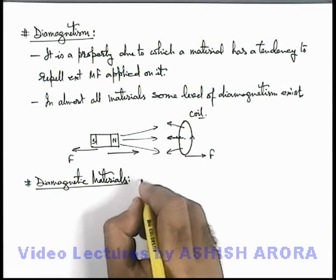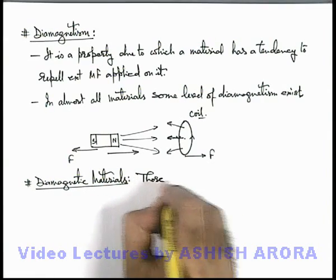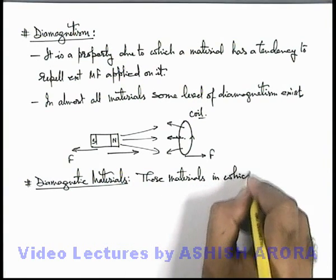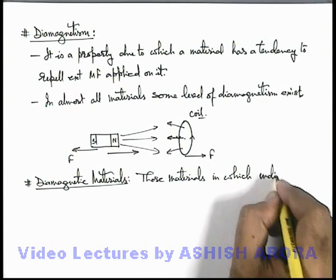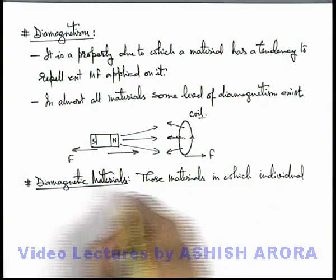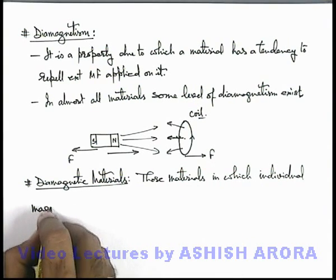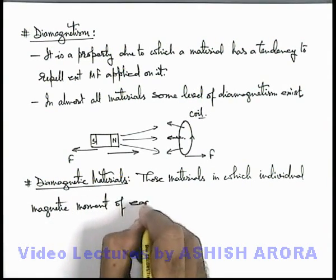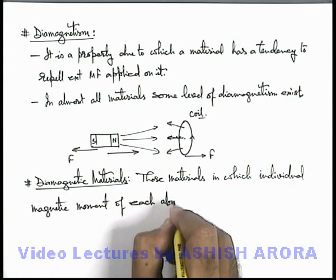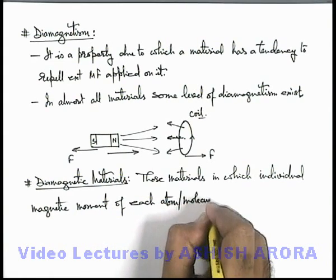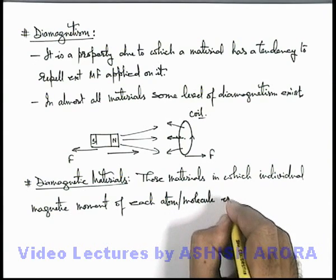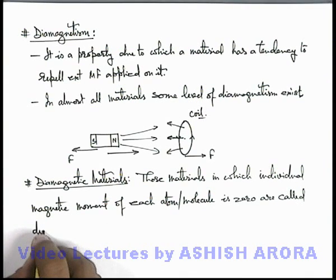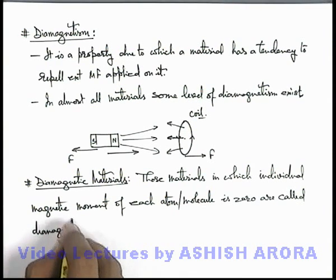Here we can write that those materials in which individual magnetic moment of each atom or molecule is zero are called diamagnetic materials.